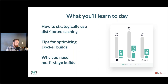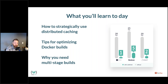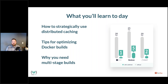We're going to talk about three different things mainly: how to use distributed caching in a strategic way and the benefits of that; how to optimize Docker builds; and multi-stage builds and why you should use them. Of course, we're also going to talk about Java, Bazel, Go, and all these other things, so they'll be fresh in your mind and you'll have some good tips.